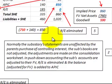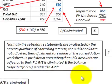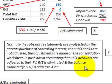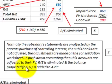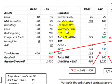Normally, the subsidiary's statements are unaffected by the parent's purchase of a controlling interest — the sub's books are not adjusted; the adjustments are made to the consolidation worksheet. In push-down accounting, the sub's accounts are adjusted to their fair value, retained earnings is eliminated, and that balance is adjusted for fair value, which is then added back to additional paid-in capital.